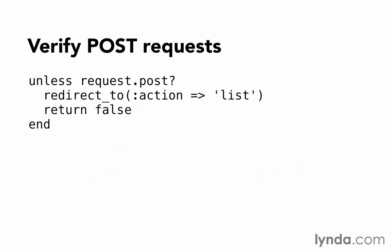For example, you might write a method that was something like this: unless the request is a POST, redirect to something else and return false. This is decent protection, but POST methods can be faked, especially with AJAX requests. So Rails offers another protection.